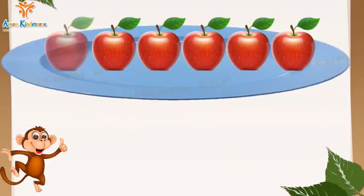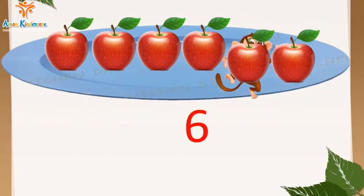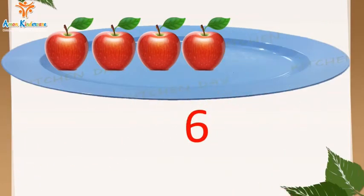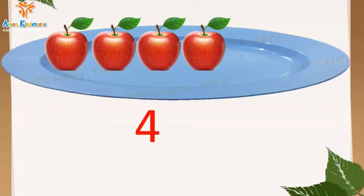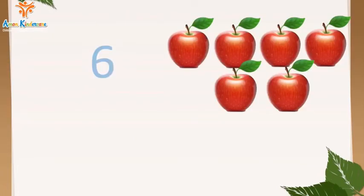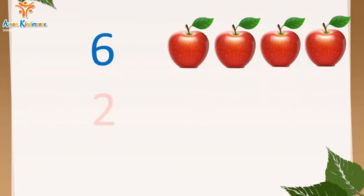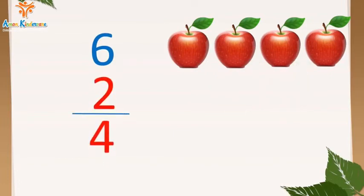Ở đĩa này cô có 6 quả táo. Bạn Kỳ lại tiếp tục lấy đi 2 quả táo nữa. Khi đó cô còn lại mấy quả táo? À, còn 4 quả không nào! Như vậy 6 quả táo bớt đi 2 quả táo bằng 4 quả táo. Hay 6 bớt đi 2 bằng 4.